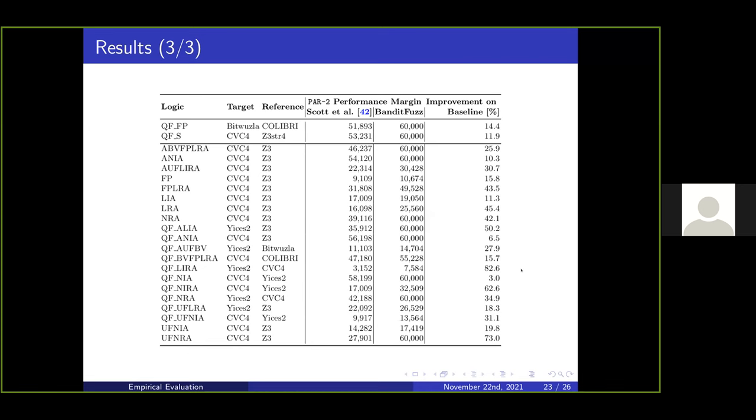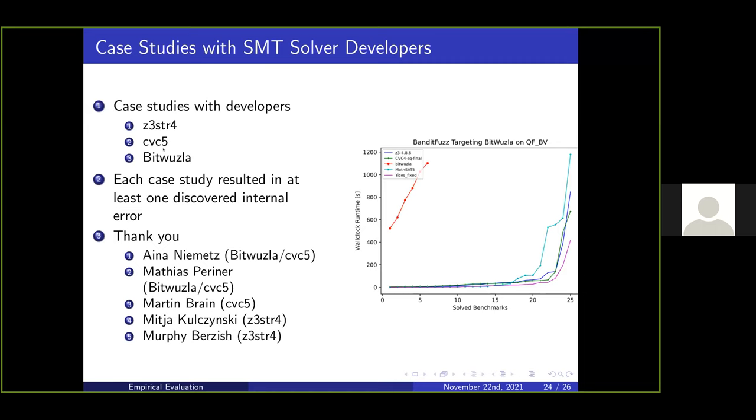We did do some case studies with solver developers, specifically Z3, str4, CVC5, and Bitwuzla. On the right here I have a cactus plot targeting Bitwuzla against a bunch of other solvers. Even though Bitwuzla won the competition several years now, BanditFuzz was able to generate a set of benchmarks that make it seem like it might not be able to win the competition—but these benchmarks aren't in the competition suite. It was a great pleasure to work with these developers. Thank you Aina, Matthias, Martin, Mitar, and Murphy.